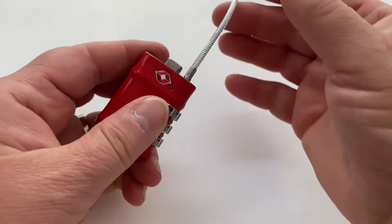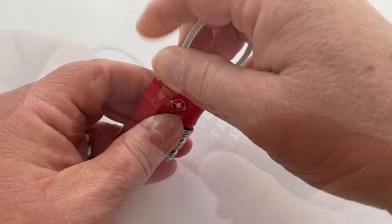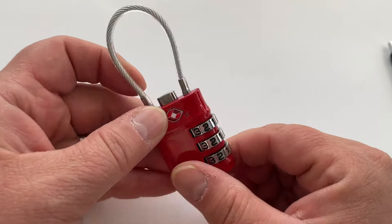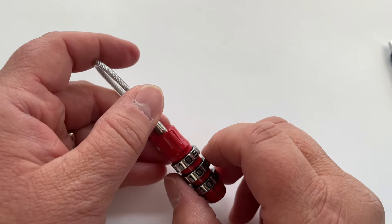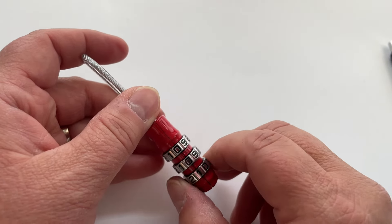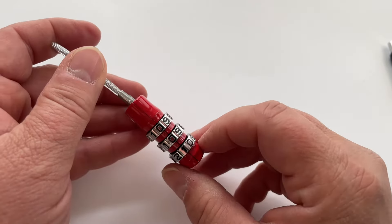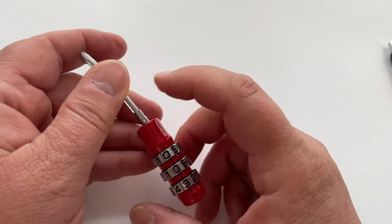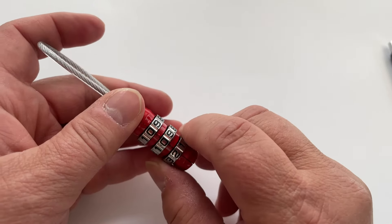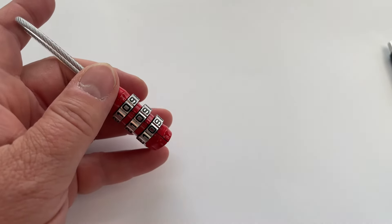Now people ask me all the time, what do I do if I forgot the combination? I'm sorry to say your only option is literally to do zero zero one, zero zero two, zero zero three. I have done this before. It's a lot of work.